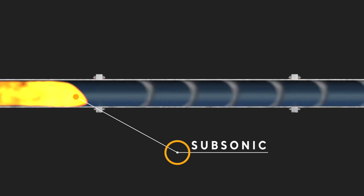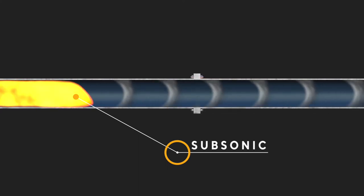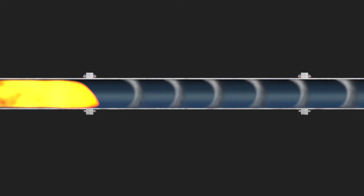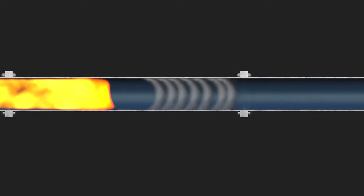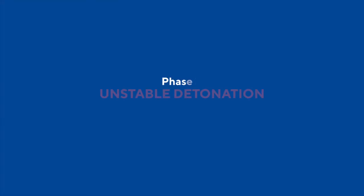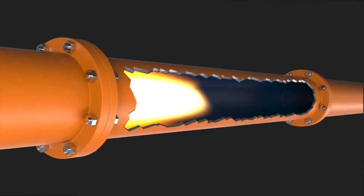Phase three: unstable detonation. If the flame continues unchecked and if there is a sufficient pipe length, then due to flame front instabilities, it will undergo a sudden and rapid transition from deflagration to detonation.